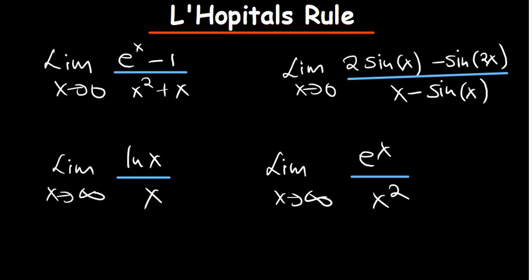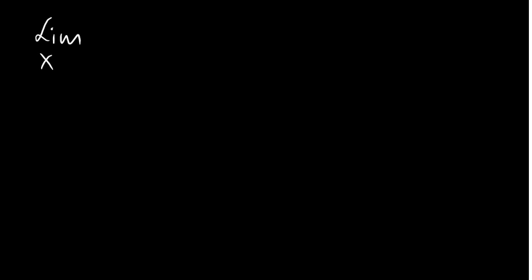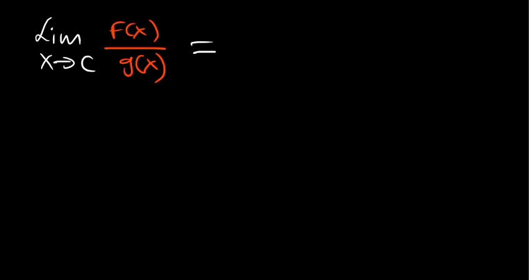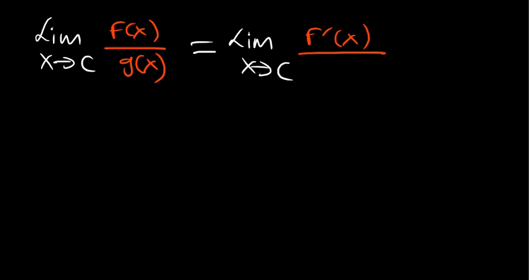Let's look at L'Hôpital's Rule. What is it actually? L'Hôpital's Rule basically tells us that if you are determining the limit as X approaches C of a function F(X) divided by another function G(X), the limit is equal to the limit as X approaches C after differentiating the function on top divided by the derivative of the other function.